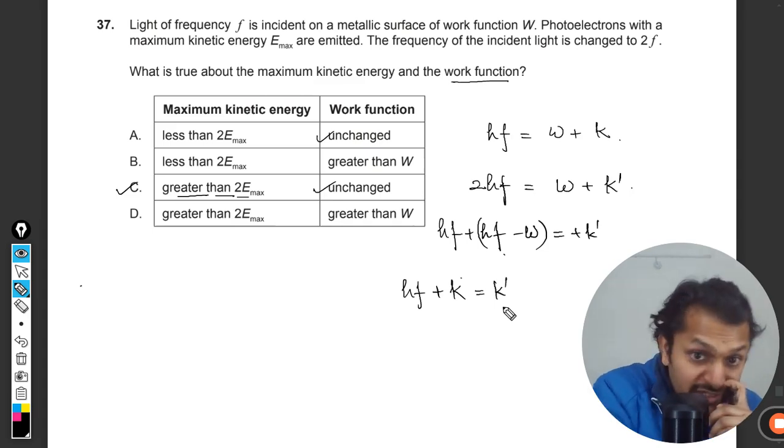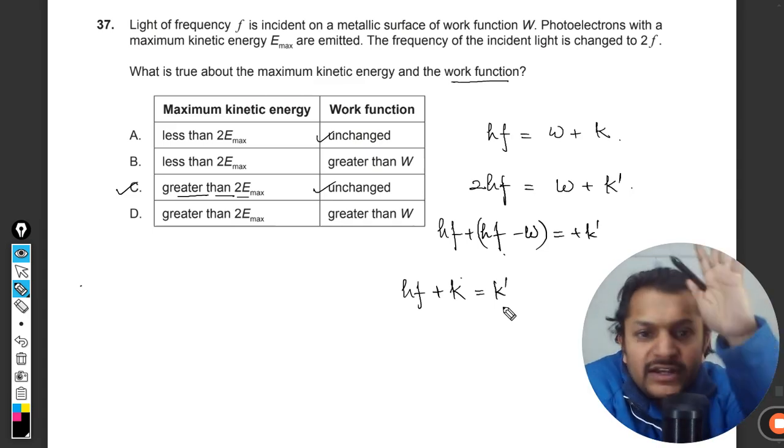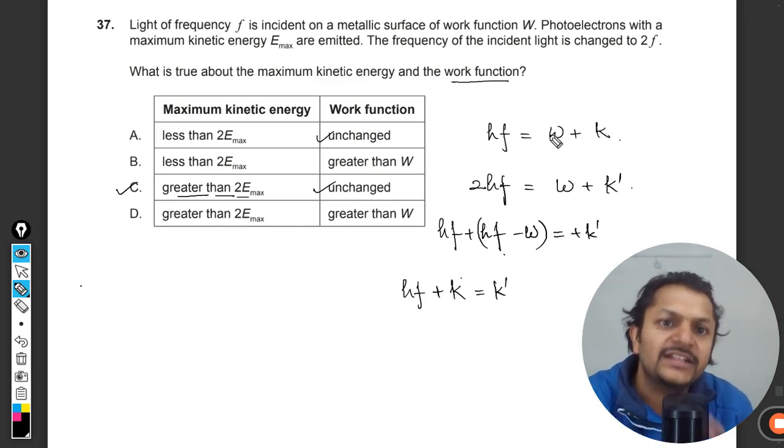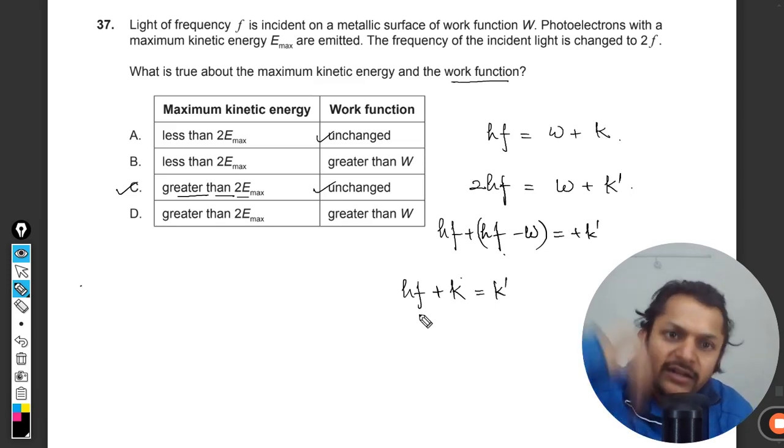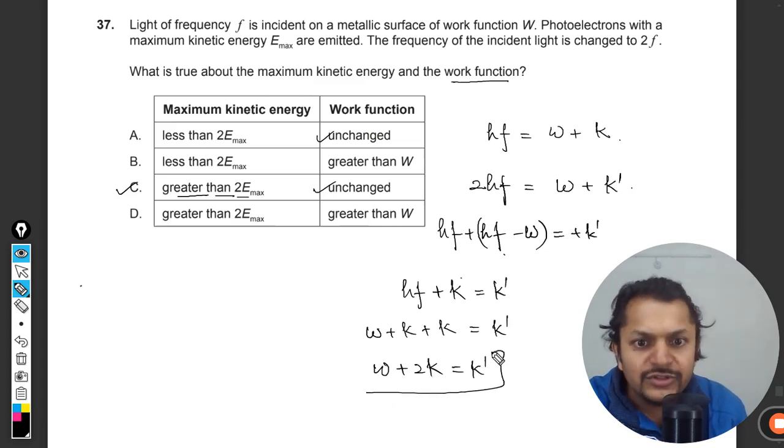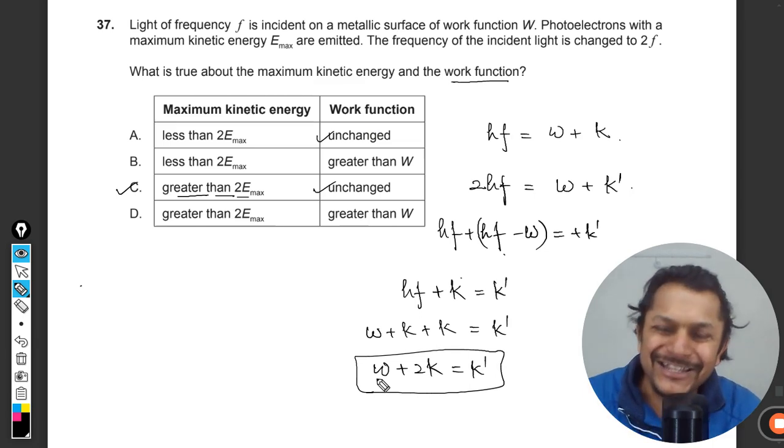Now still we are not able to prove that it will be greater than this, so we have to substitute the hf also. I can again say that hf = W + k. I substitute this, so that will become W + k + k = k'. So it will become W + 2k = k'. Clearly, by using this equation we can say that yes, now in the second case the final maximum kinetic energy will be more than the double of what it was earlier.